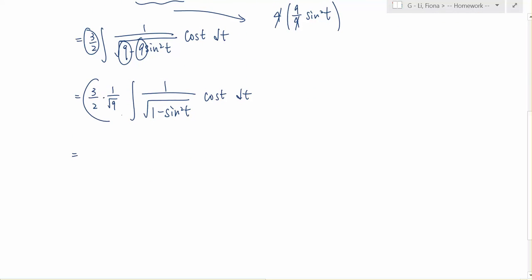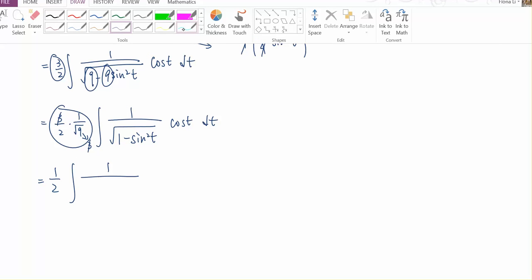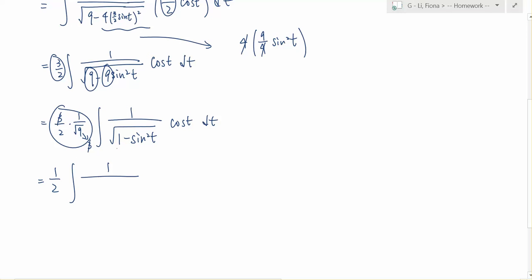So let's simplify this part, and it's basically 3, and then if we multiply them together, we will get 1 half times the integral of 1 over...